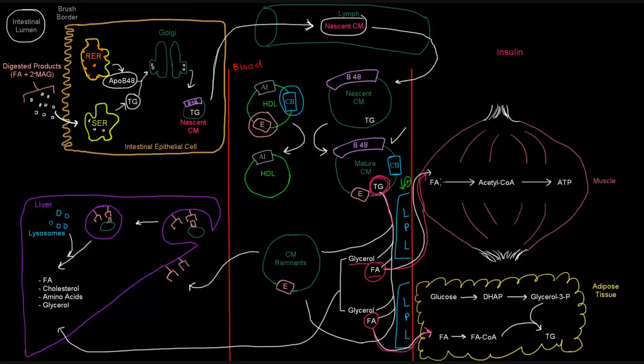Now, the muscle cell is basically going to use these fatty acids, break them down via beta-oxidation to give acetyl-CoA, which can go to the TCA cycle and the electron transport chain and eventually give you ATP. So the muscle basically uses the fatty acids for energy.